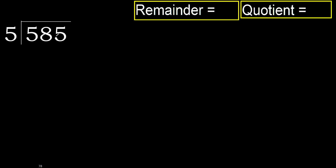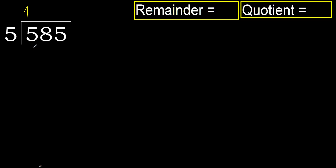585 divided by 5. 5 is not less than 5, therefore 5 multiplied by which number is nearest to 5 but not greater? 5 multiplied by 2 is 10, which is greater. 5 multiplied by 1 is 5, which is not greater.